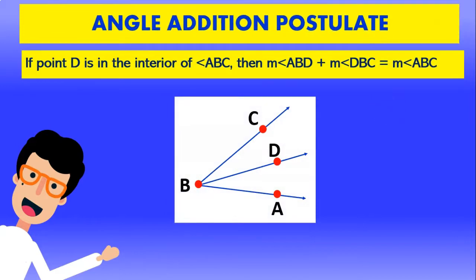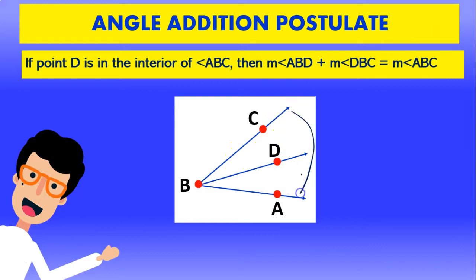First we're going to be defining the angle addition postulate, which says that if a point D is in the interior of angle ABC, then the measurement of angle ABD plus the measurement of angle DBC is equal to angle ABC. It basically says that if we have a point D in the center of a larger angle like ABC, then angle CBD plus angle DBA gives us the whole angle.